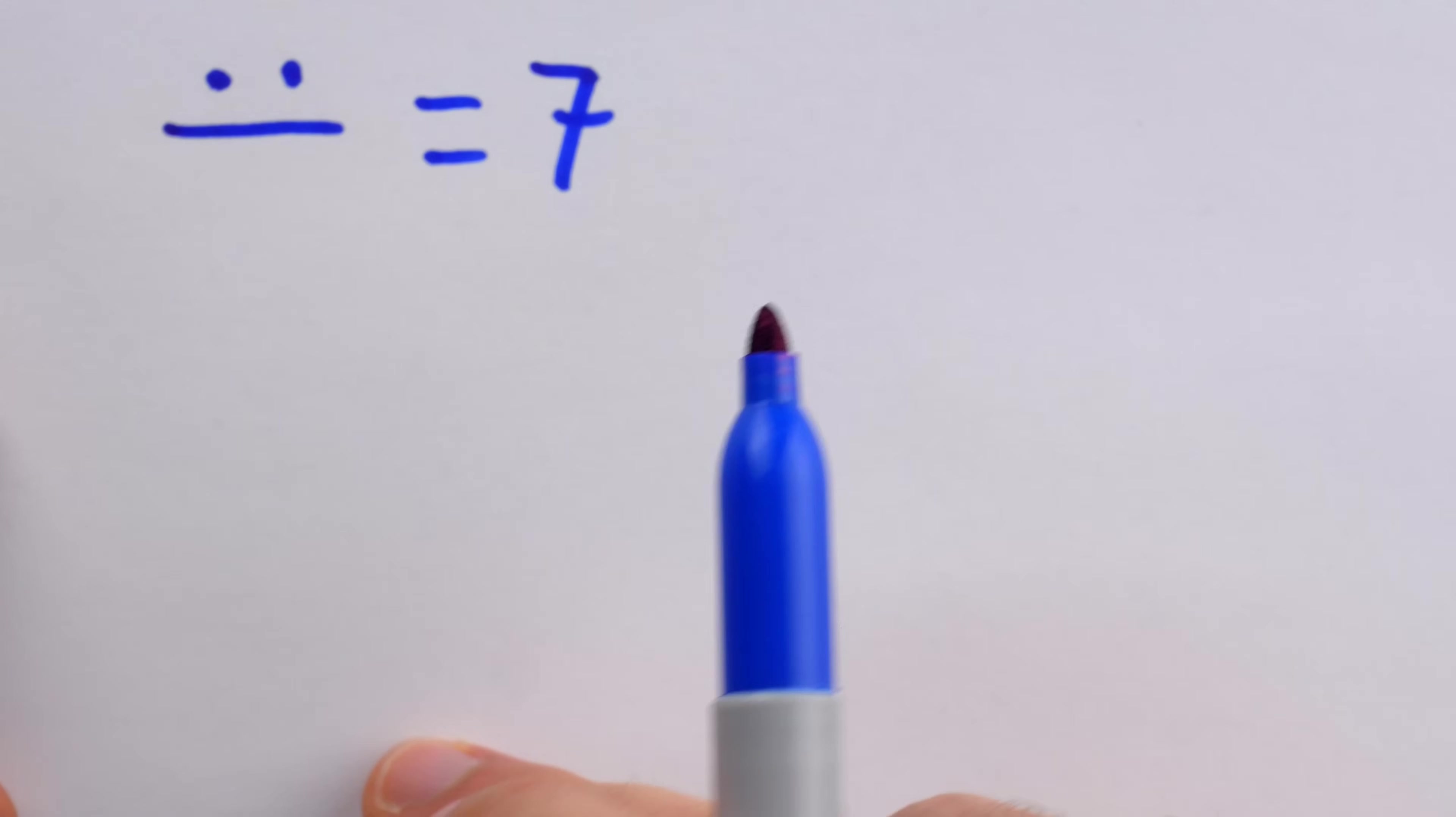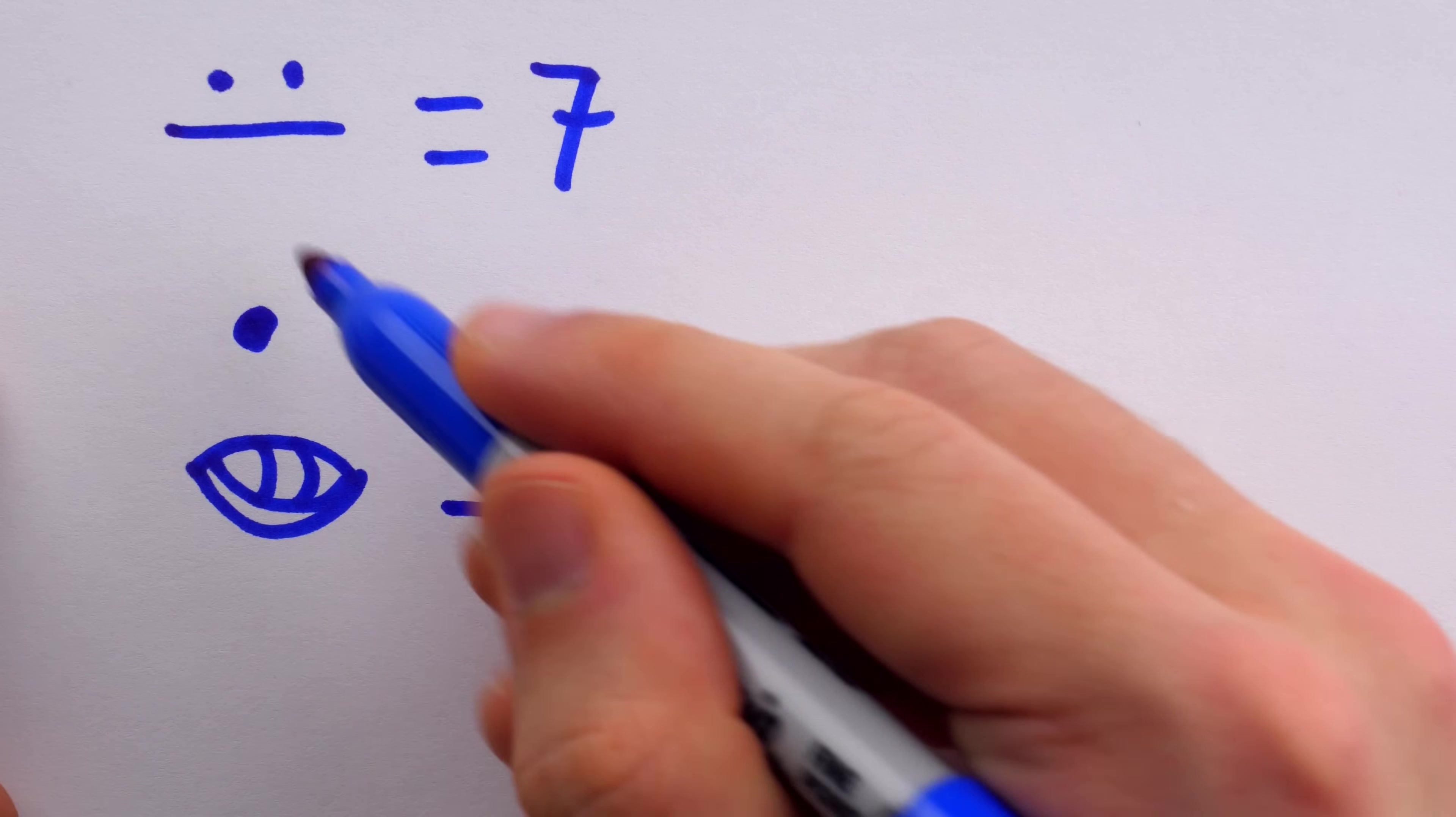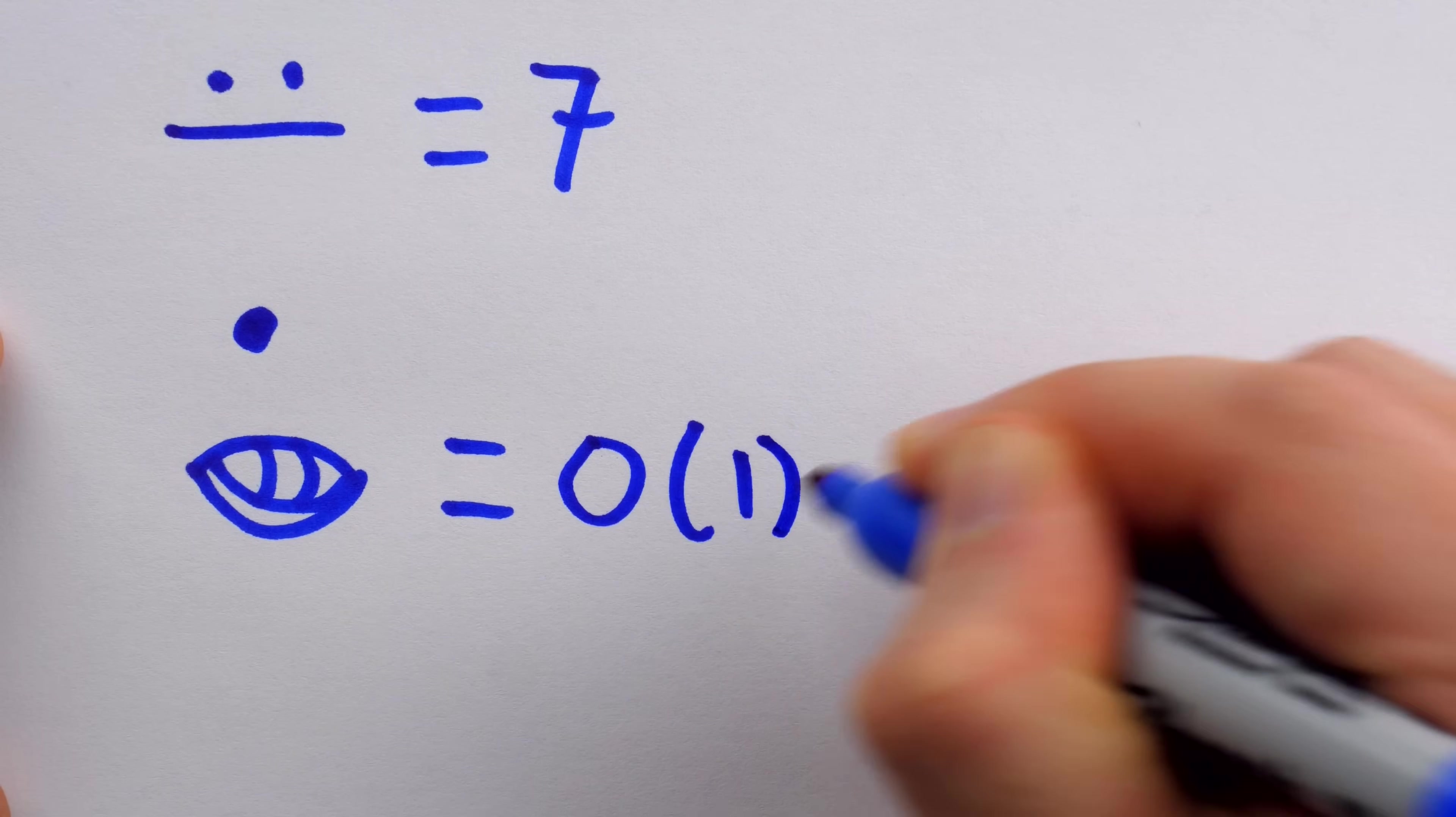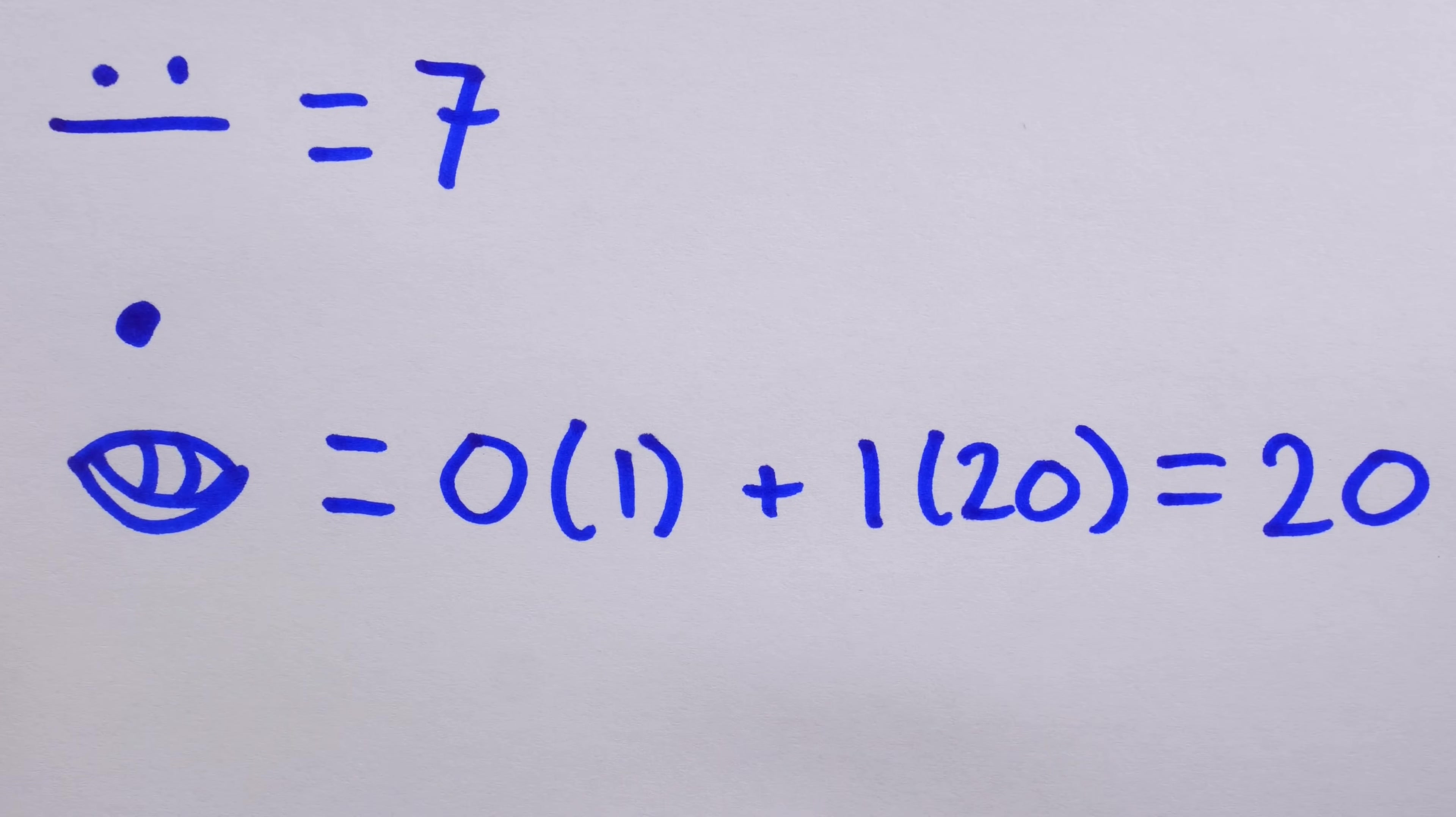In their number system, larger numbers that need multiple place values were written vertically, in a descending order. So the biggest groups would be at the top, and then the units would be at the bottom. So another example of a number could be this dot, and then below it, we have this shell. What do you suppose this is equal to? To assess the value of this number, we need to understand that it's a base 20 system. So this shell in the ones place represents that we have zero ones. But then this dot in the next place value up represents that we have 1 20. So this is how we would write 20 in the Mayan system.